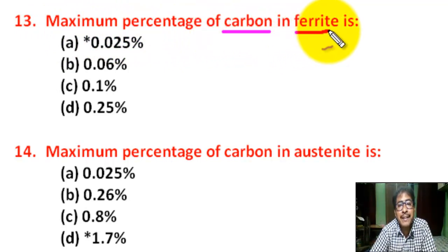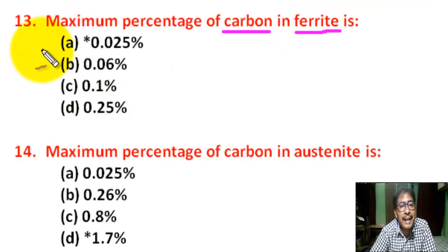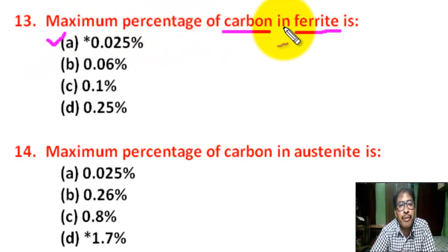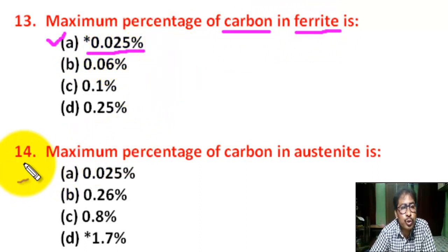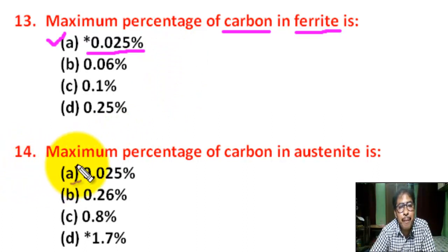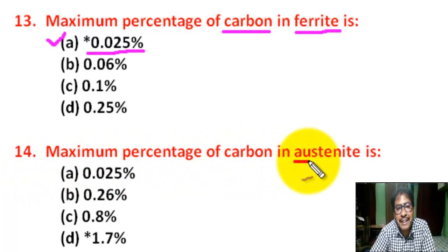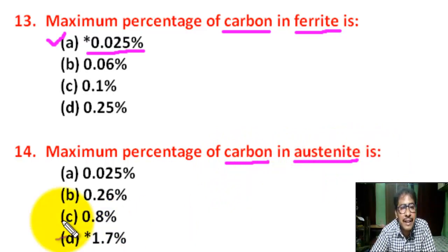Question number thirteen: maximum percentage of carbon in ferrite — correct answer is A — maximum percentage of carbon in ferrite is 0.025%. Question number fourteen: maximum percentage of carbon in austenite.